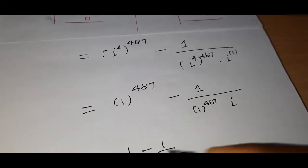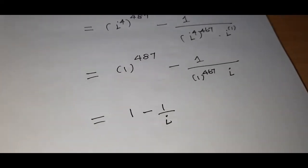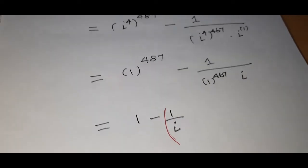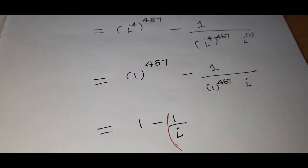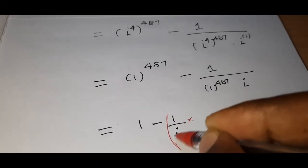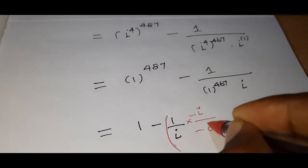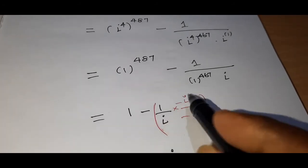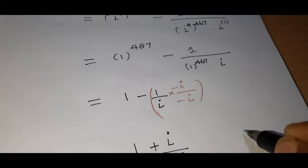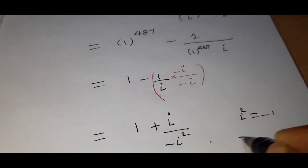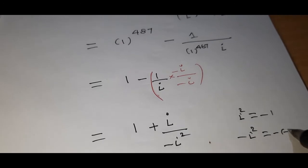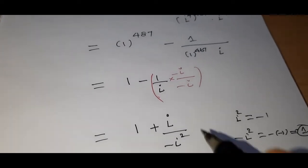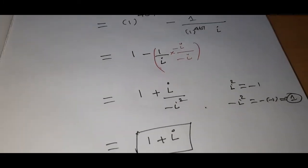We get 1 minus 1 by i. To remove the imaginary number from the denominator, multiply by i over i. This gives i minus i squared over i squared, which is minus i squared equals minus of minus 1, equals plus 1. So the answer is 1 plus i. This is question number 2.